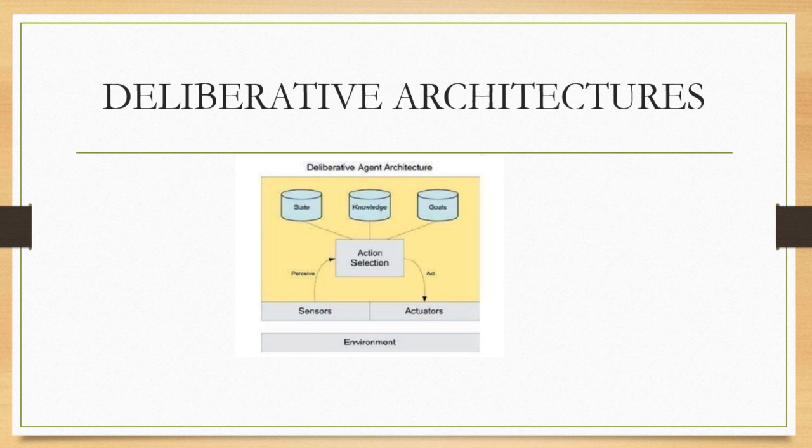In deliberative architecture, the agent will sense the environment, solve all complex problems, and give the output to the actuators. The advantage is that it can solve complex problems, but the disadvantage is that it takes more time to solve them.